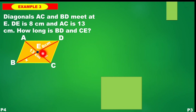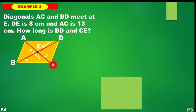Segment BA is X, and diagonal AC is equivalent to 13 cm. The question is: how long is segment BD — the totality of that diagonal? And also, how long is segment CE?